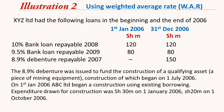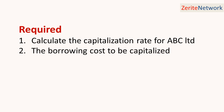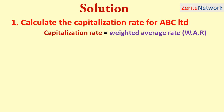The loans are given as follows. The 8.9% debenture was issued to fund the construction of a qualifying asset — a piece of mining equipment — construction of which was to begin in July 2006. On 1st January 2006, ABC Limited began construction using existing borrowing. Expenditure drawn for construction was 30 million shillings on 1st January 2006 and 20 million on 1st October 2006. Required: calculate the capitalization rate for ABC Limited. We are going to use 2008 and 2009, ignoring 2007 simply because it's not a qualifying asset since it only occurs for a fraction of the year.